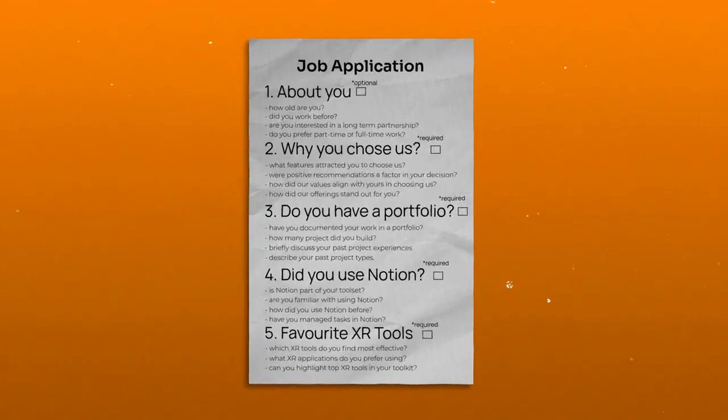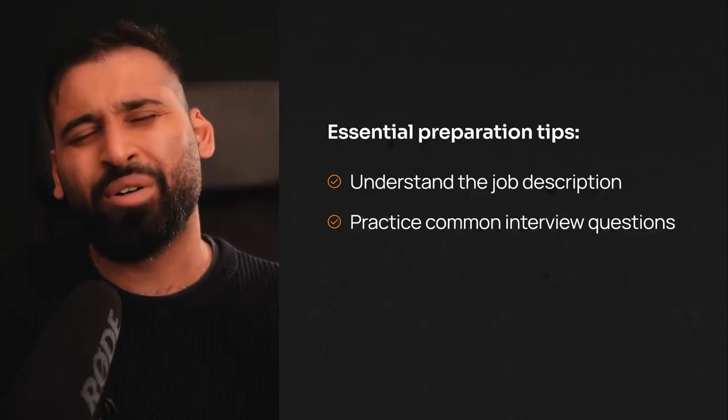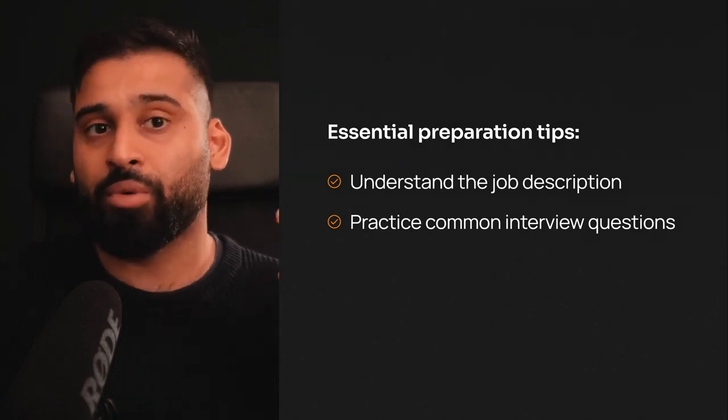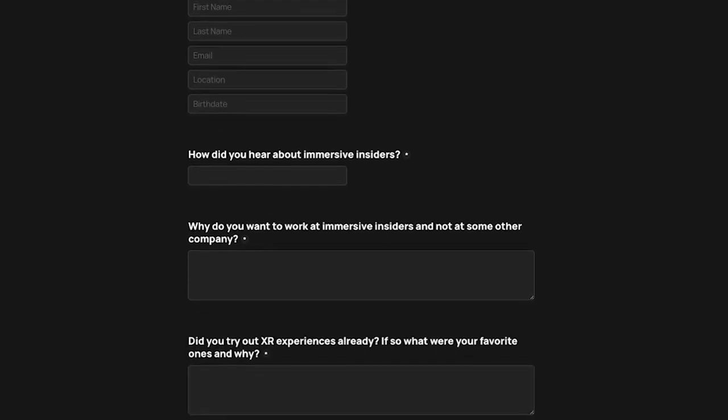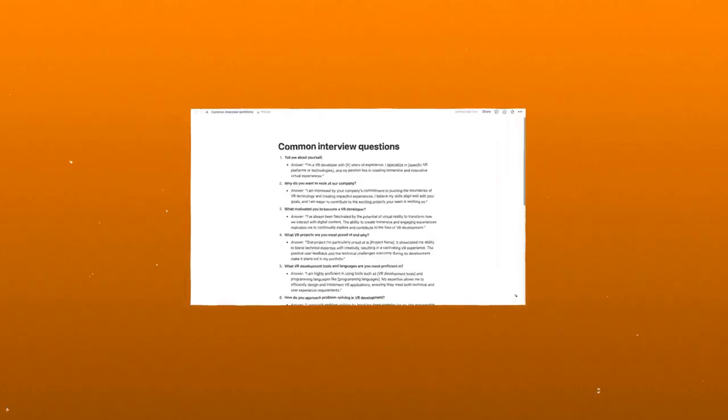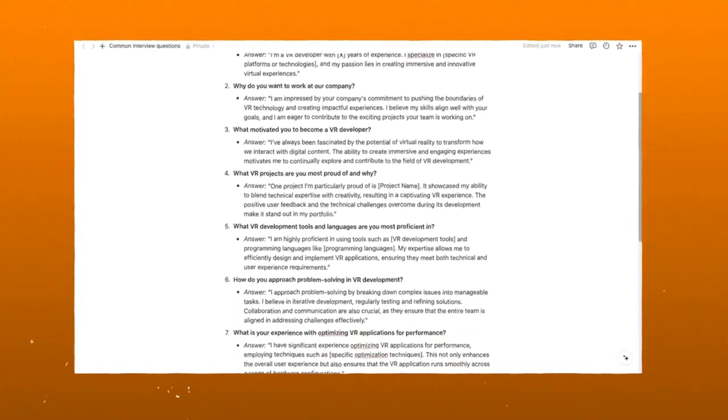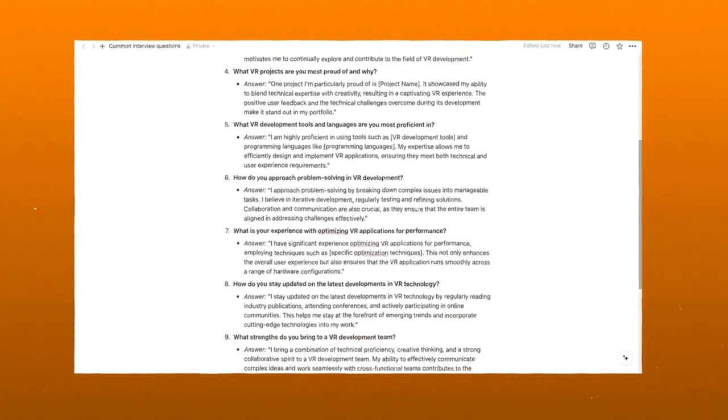The best thing you can do is take the required and optional items in the job description and show what you've built for each one — that's going to stick out positively. Next, practice very common interview questions. We interview people at Immersive Insiders as well, and I see a lot of common mistakes: people don't know how to answer common questions like 'tell me about yourself,' 'why do you want to work at our company,' or 'what do you think about this field.' If you know these questions are coming, you can prepare really well. Have a Notion database of common questions with authentic, honest answers that you can reuse — strengths and weaknesses, all of those kinds of things.